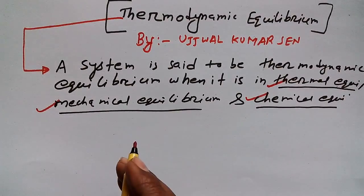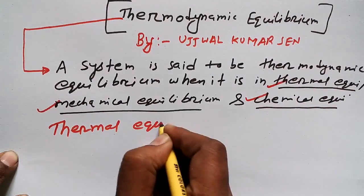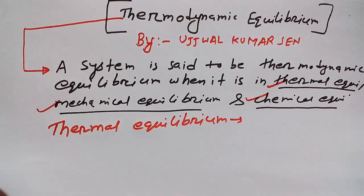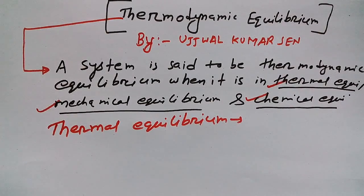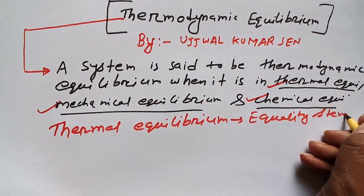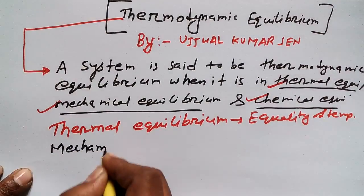In case of thermal equilibrium, what we have to satisfy is this term: there would be equality of temperature. So the temperature throughout the system must be equal — that is what satisfies thermal equilibrium.